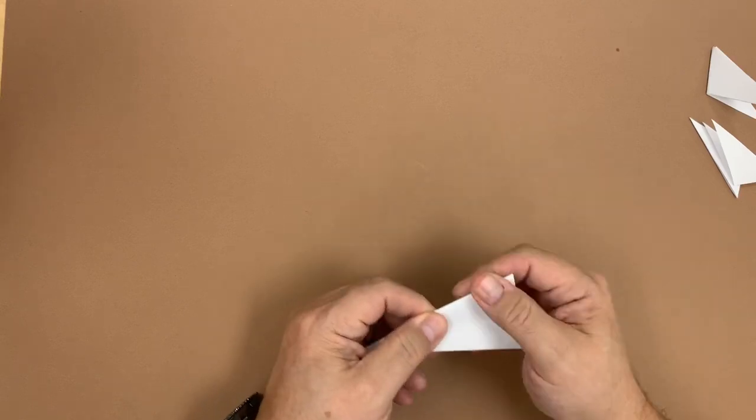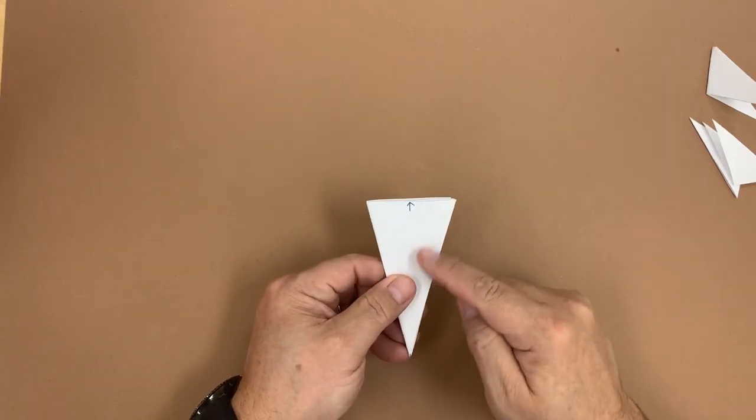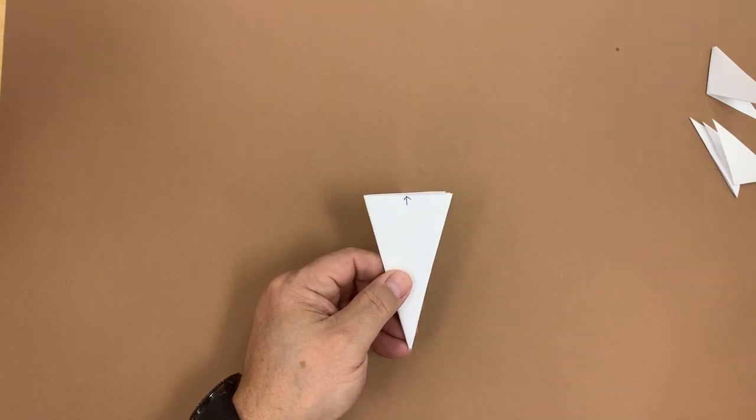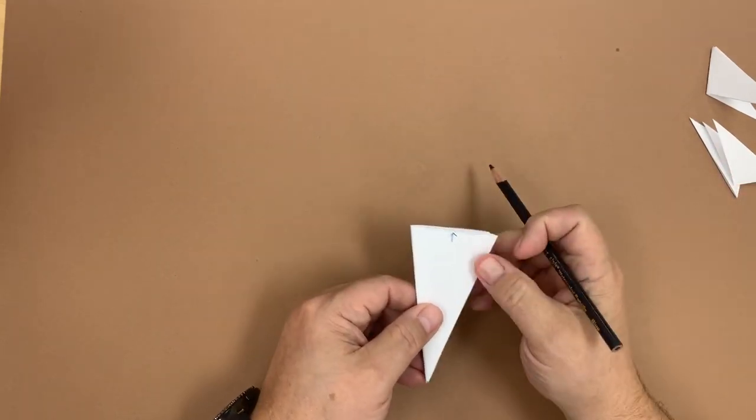Now, the trick to doing a good snowflake is to create pathways that go through the figure that are very geometric. Now, you can draw on it to make these pathways, or you can just cut them out naturally.